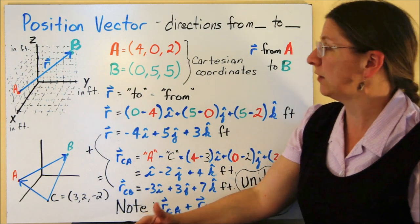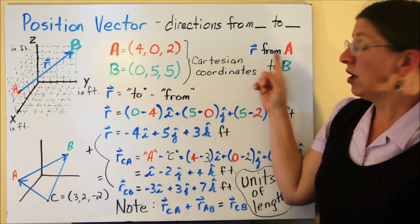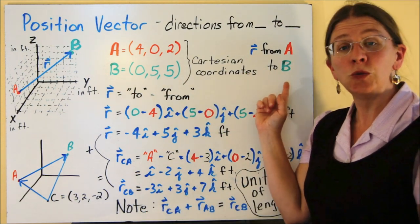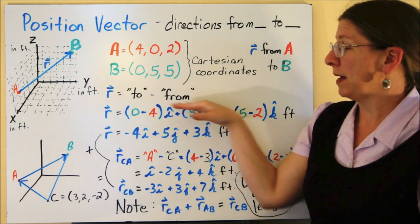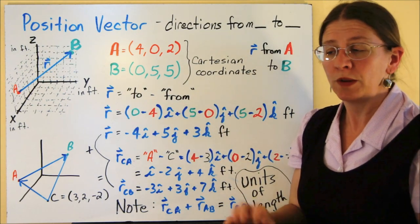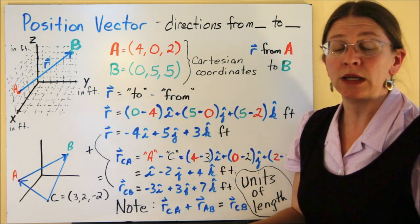The position vector goes from A to B. So the basic form, the phrase you want to remember is to minus from.